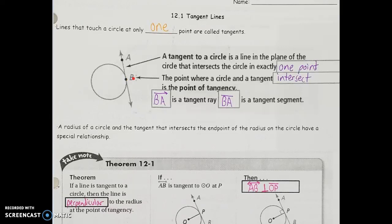That leads us to our first definition: a tangent to a circle is a line in the plane of the circle that intersects the circle in exactly one point. The point where the circle and the tangent intersect is called the point of tangency. In this case, point B is the point of tangency. We could also describe parts of the tangent line itself — ray BA would be a tangent ray, and segment BA would be a tangent segment.